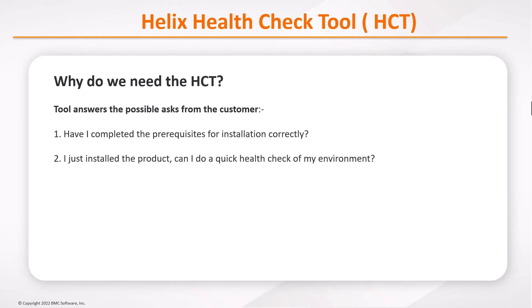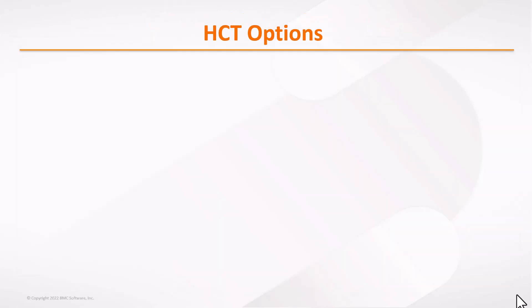Whenever a new user installs a BMC Helix product, two questions come to mind. First: have I followed all the system requirements, the day-zero checklist, and will my installation be successful once I start the deployment? Second: I just installed the product — can I do a quick health check of my current environment to make sure it is stable and functionally working well? The Helix health check tool solves those pain points.